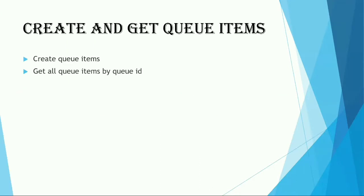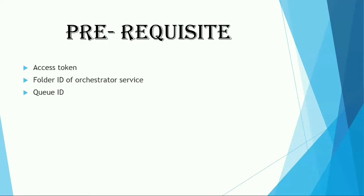In this video, we're going to see how we can create the queue item under a specific queue and how we can get all the items of a specific queue. Before going ahead, we need an access token to authenticate our API, we need the folder ID of our Orchestrator, and we need a queue ID to get all items of that particular queue.